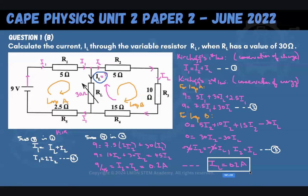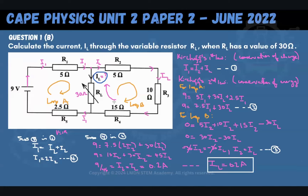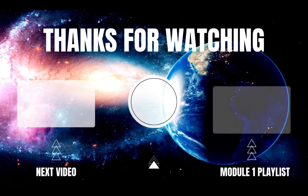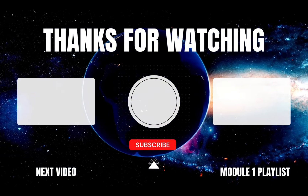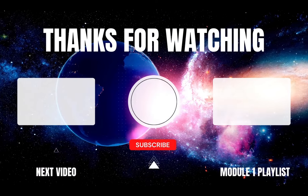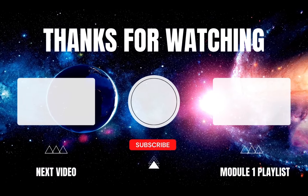This kind of question is worth a lot of marks — this one was worth 10 marks. The key is to identify your loops, write out Kirchhoff's first and second laws to get your system of equations, then use substitutions to solve for your unknown. We came up with IL = 0.2 amperes. Give this video a like, subscribe to the channel, and check out the next video and our module one playlist for more content to help you prepare for your exam. Thanks for watching!